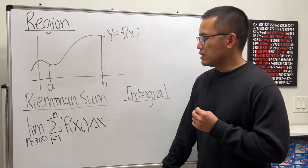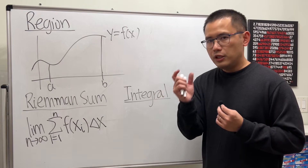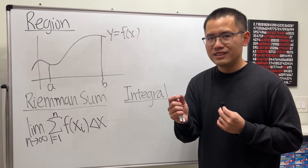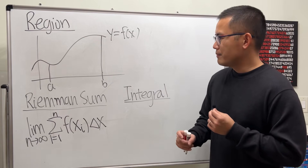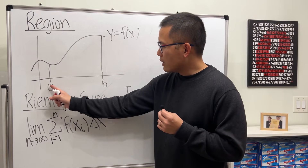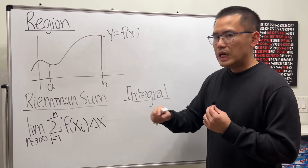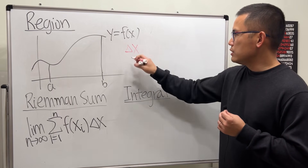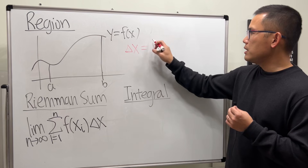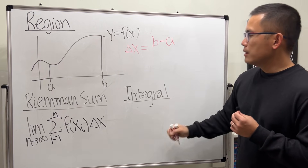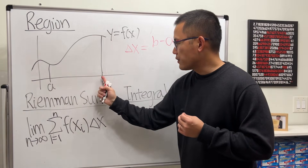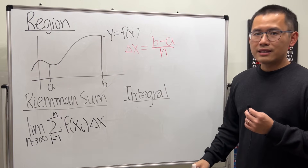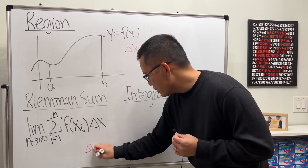Let's talk about how we can compute delta x. This is the width of each rectangle, and we want all the rectangles to be equal width. We are going from a to b and we want to cut this into n pieces, so each piece — denoted by delta x — has to be b minus a divided by n. That tells us the distance from a to b divided into n equal parts.